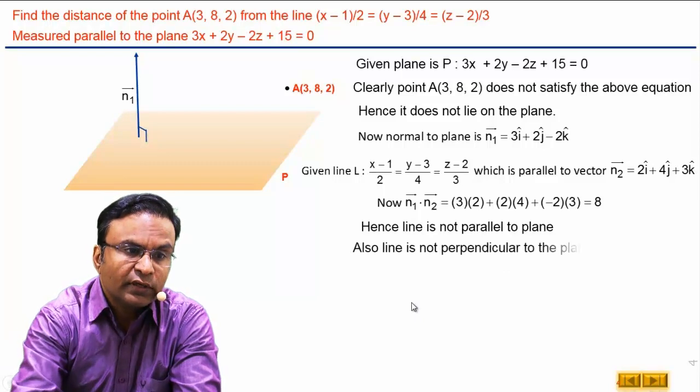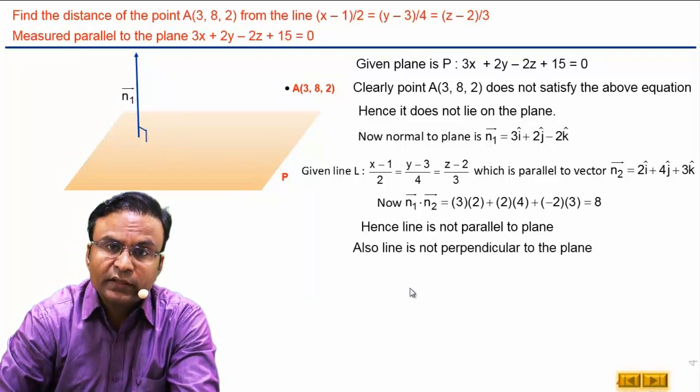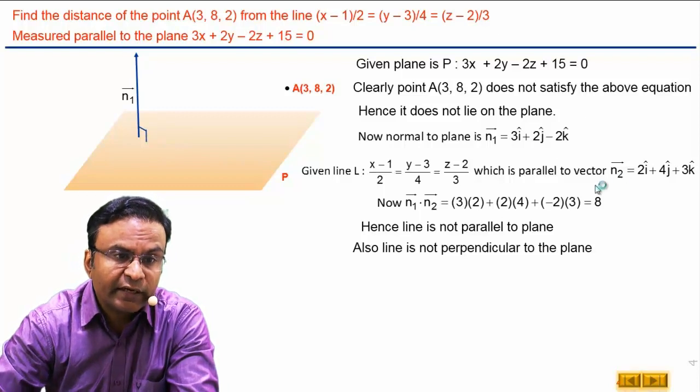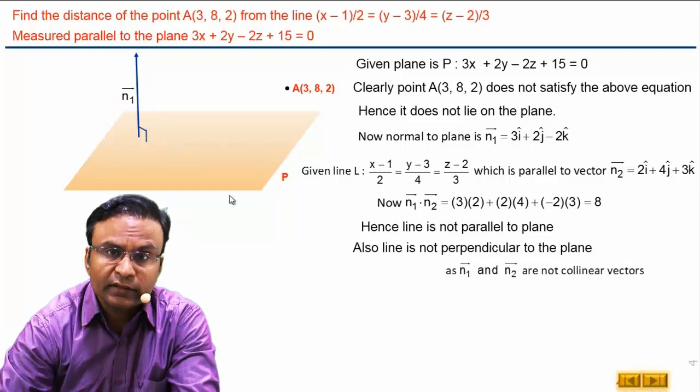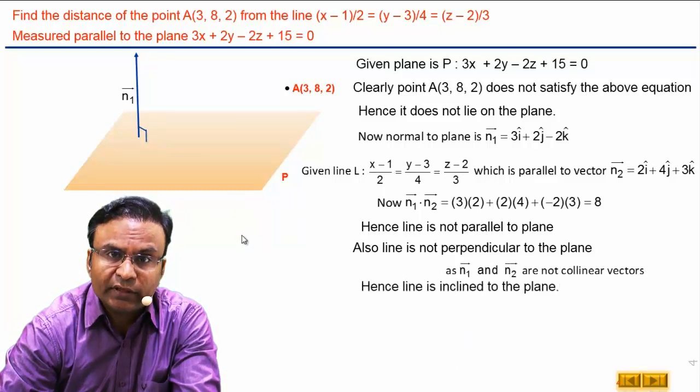Also, line is not perpendicular to the plane. The reason is vectors n1 and n2 are not collinear. That means line is here inclined to the plane.